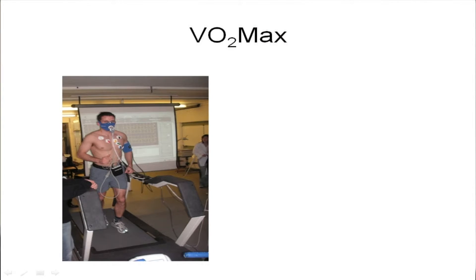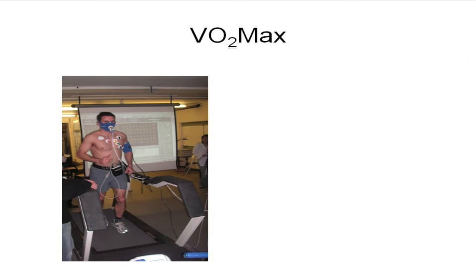Here is one of our subjects in a laboratory, all wired up for oxygen uptake, carbon dioxide, and respiration — and in this particular instance, for ECG and blood pressure as well. Not always do we take ECGs and blood pressure, but the most important parts are the heart rate monitor and the oxygen and carbon dioxide analysis kit that goes along with the face mask. Here's a subject running on the treadmill.